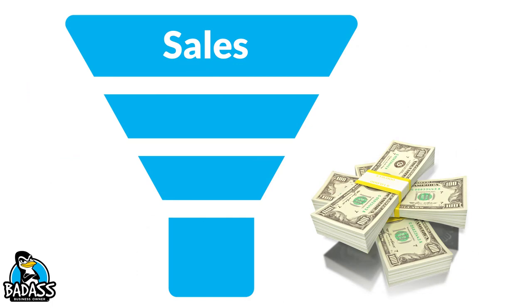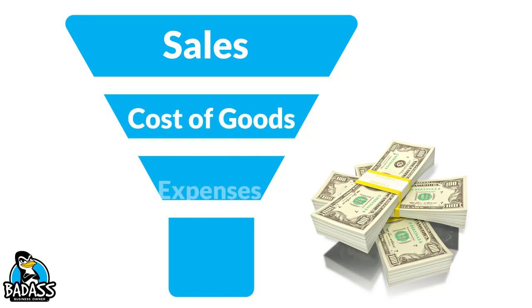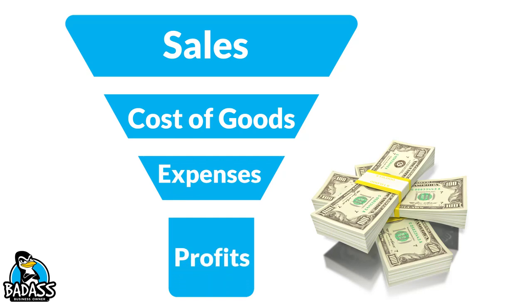Let's focus on the basics first. Everything that you sell comes into the business — that's your sales. Then you're going to have money that goes out for your cost of goods, money that goes out for your expenses, and if all plays out well, at the end of the day you have your business profits. Every single thing that comes into your business is up here at sales, so that's 100% because we haven't spent a dime yet. Sales come in, we have a hundred percent of our money, and we're going to show where that money goes.